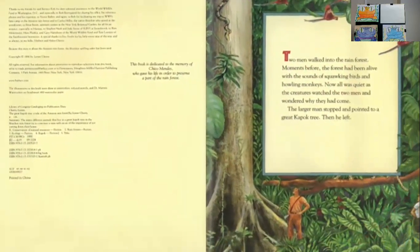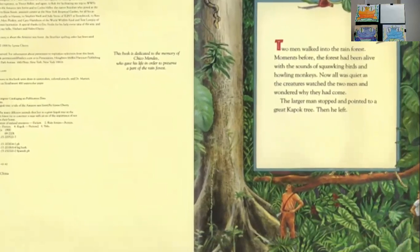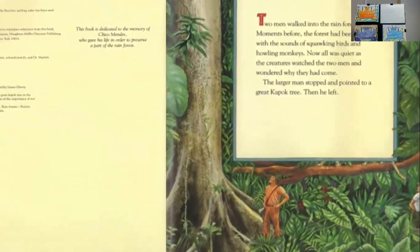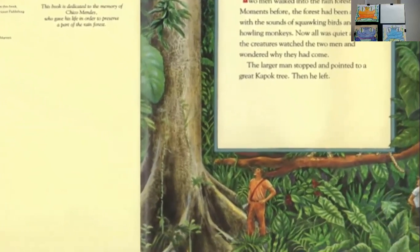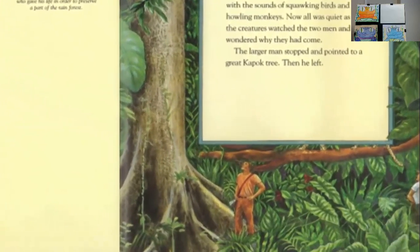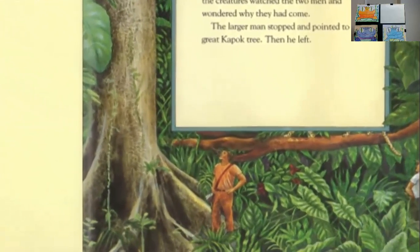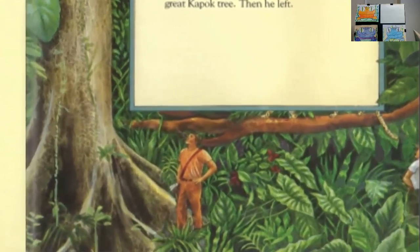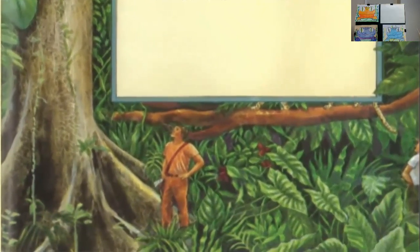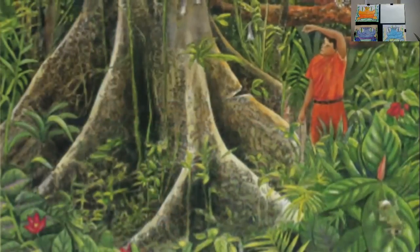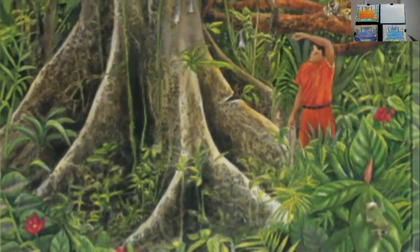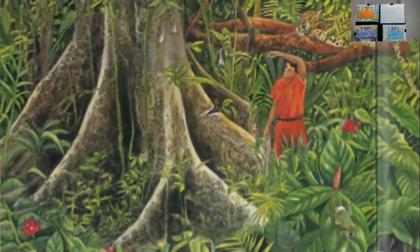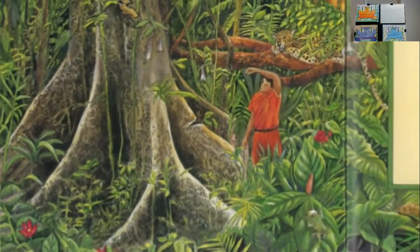Two men walked into the rainforest. Moments before, the forest had been alive with the sounds of squawking birds and howling monkeys. Now all was quiet, as the creatures watched the two men and wondered why they had come. The larger man stopped and pointed to a Great Kapok Tree. Then he left. The smaller man took the axe he carried and struck the trunk of the tree. Whack, whack, whack. The sounds of the blows rang through the forest.